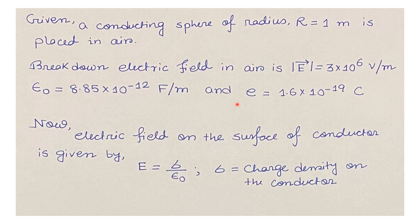The electronic charge is 1.6 × 10⁻¹⁹ coulomb. Now, we know the electric field on the surface of a conductor is given by E = σ / ε₀, where σ is the charge density on the conductor surface.